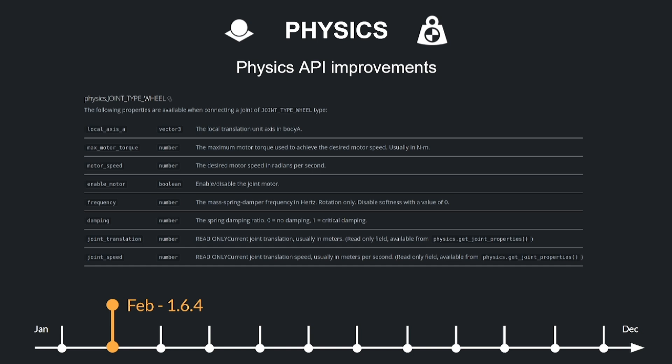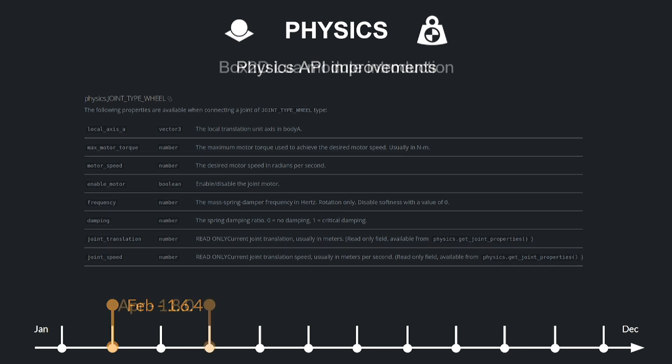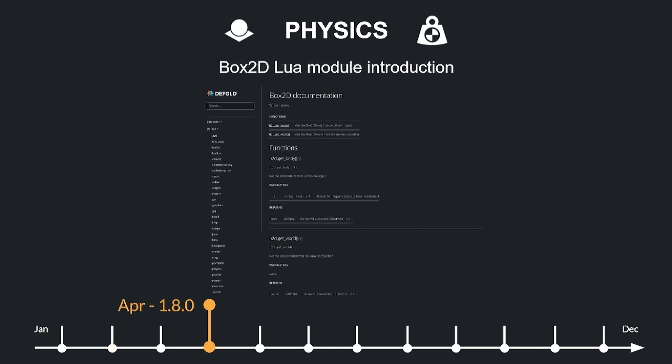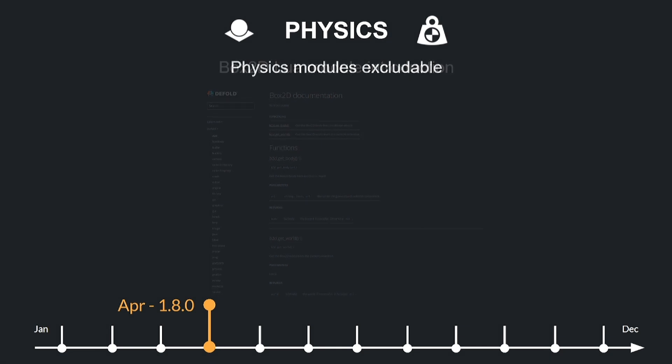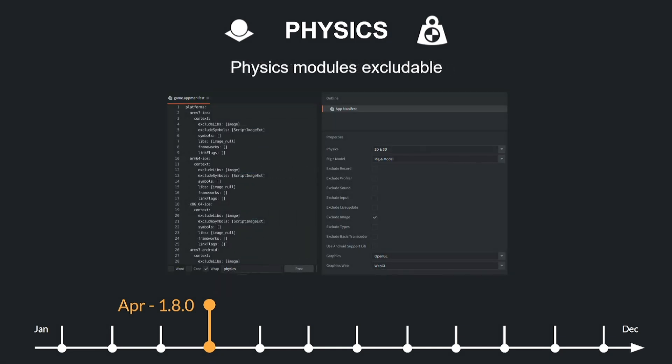In terms of physics improvements this release was astonishing, just to surprise you a bit later with a totally new module called B2D to access the Box2D API directly for physics manipulation via Lua scripts. This exposes the Box2D API and thus enables developers to manipulate physics bodies, forces, velocities, and other Box2D properties directly through Lua. It also comes with a possibility to exclude physics from the engine — you now have new options in AppManifest to exclude 2D or 3D physics, or both, or none.